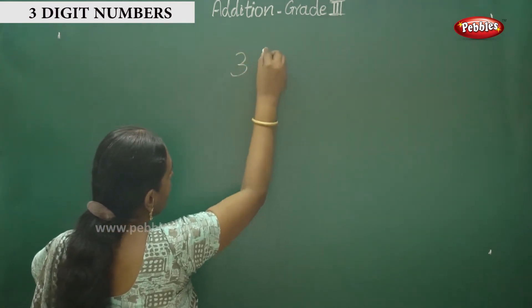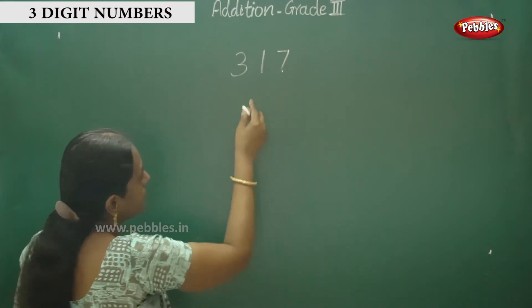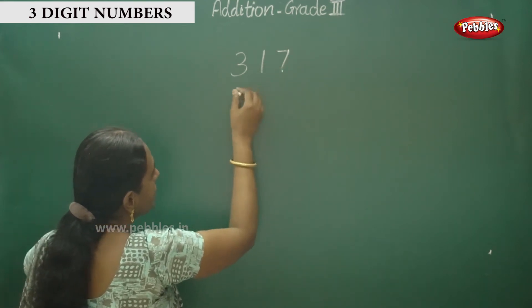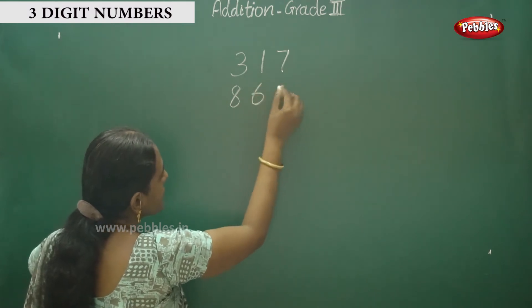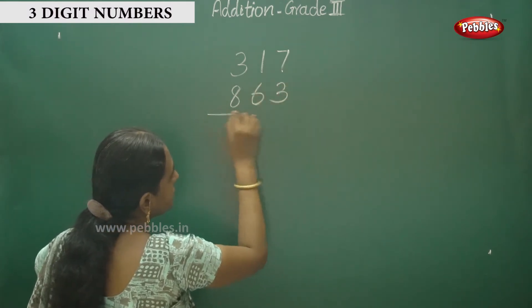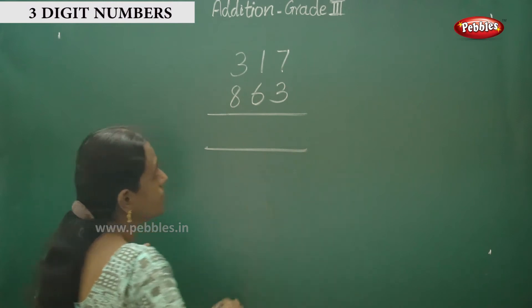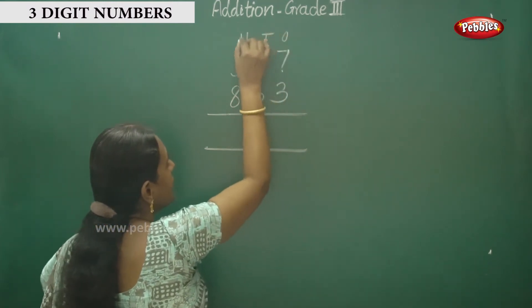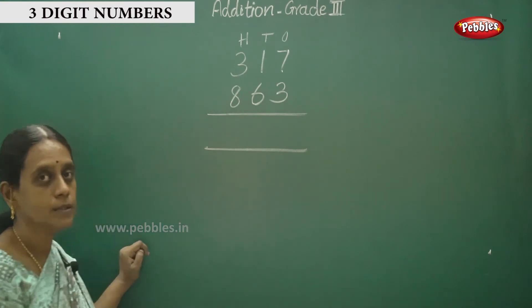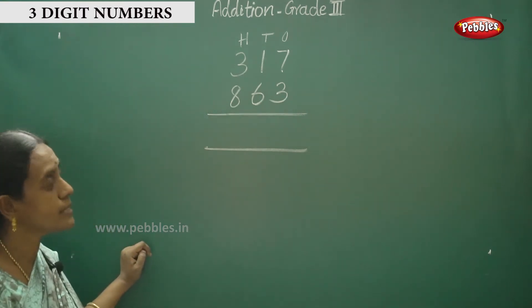First, three, one, seven. And here, eight, six, three. So, ones, tens, and hundreds. Observe this: ones, tens, and hundreds.